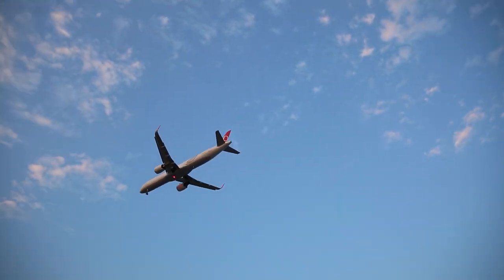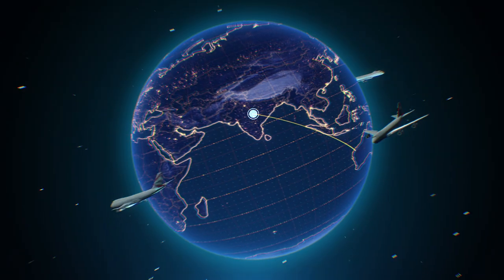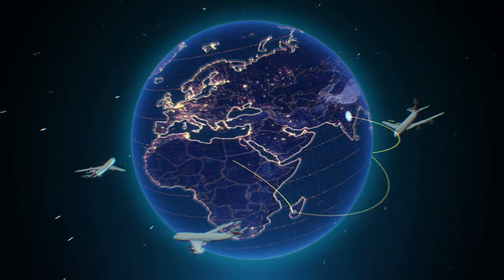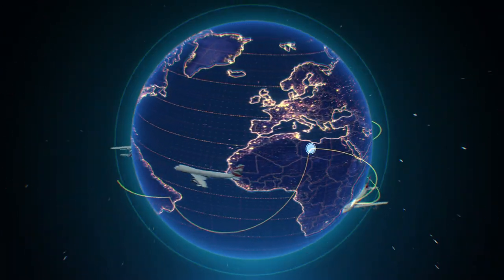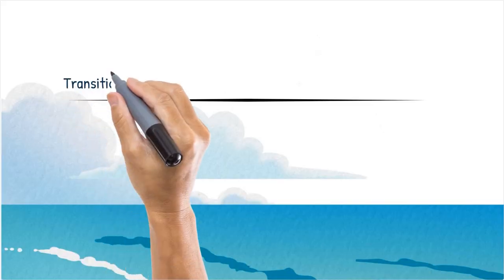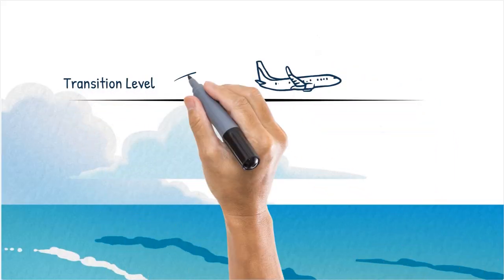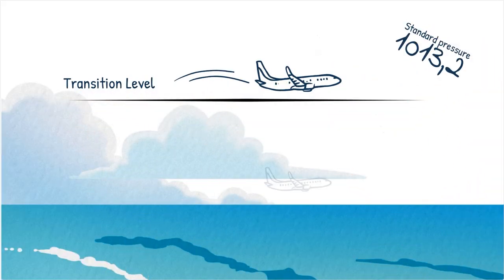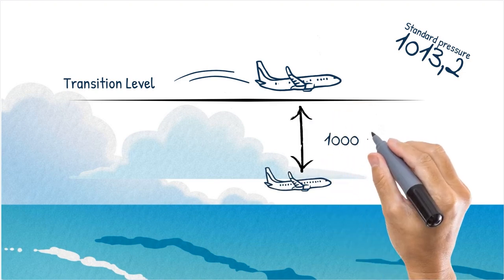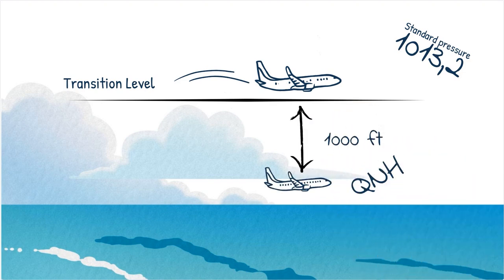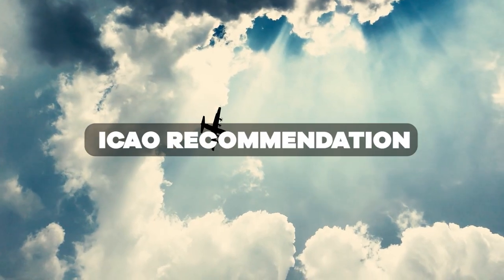In Europe and much of the rest of the world, the transition altitude varies from airport to airport. It is a fixed value and is published in the AIP. The transition level will float with the QNH. The transition level is the lowest assignable level that will guarantee a minimum of 1,000 feet vertical separation from an aircraft at the highest assignable altitude using local QNH, which is the ICAO recommendation.